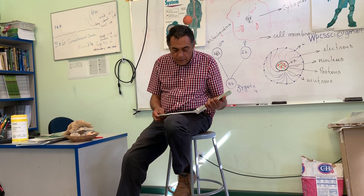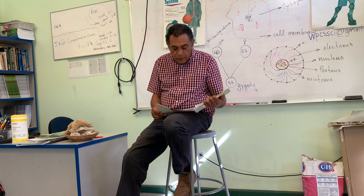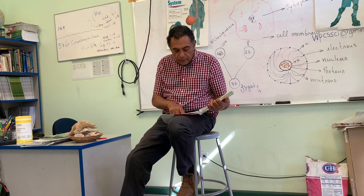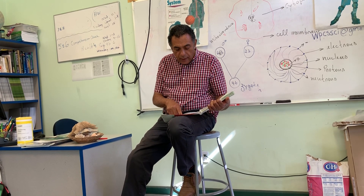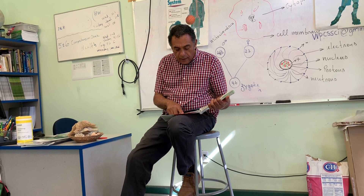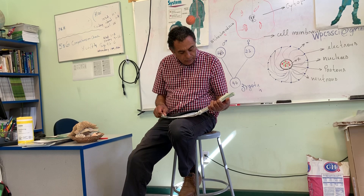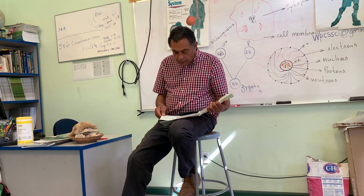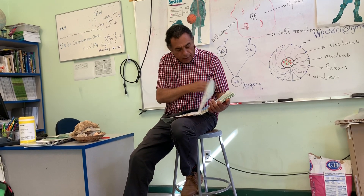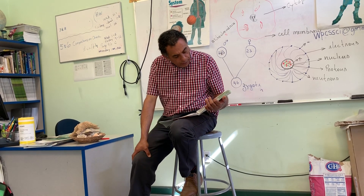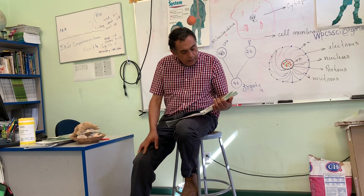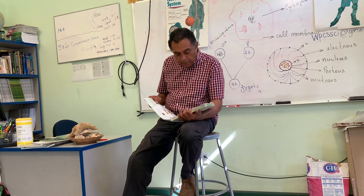The first group: blue represents metals. The yellow represents non-metals. And the pink represents semi-metals. Now let's go to page 294 where we're going to talk about metals.